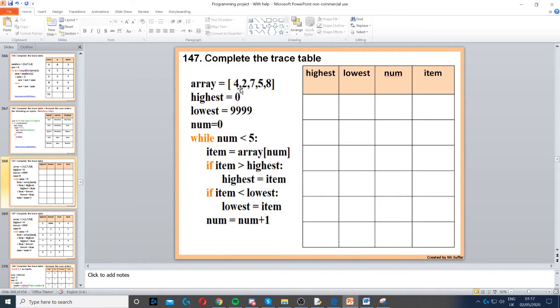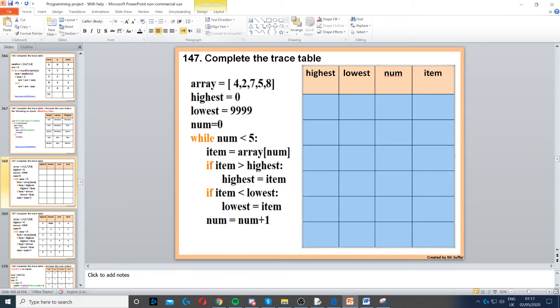For this question, we have a trace table on this array. We've got an array, and then highest is set to 0. Now firstly, what we need to do is set highest to 0, so we put 0 in there. Then lowest is 9999. Then we've got num equals 0, so all these are easy at the moment.